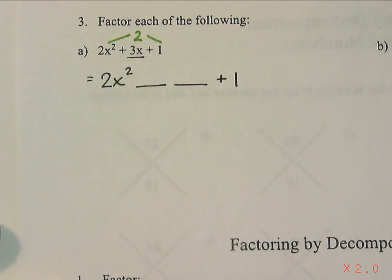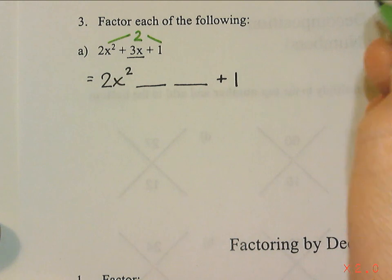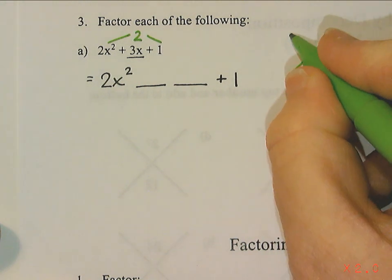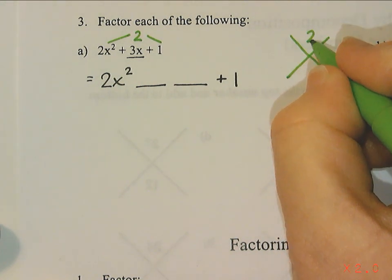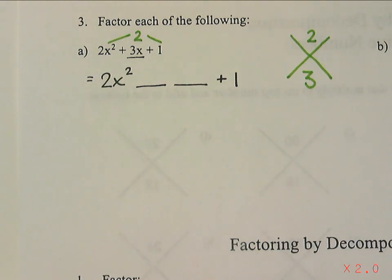So the two like terms that I added together to get 3x should also multiply to 2. So we are going to look for two numbers that multiply to 2 and add to that middle term 3x.